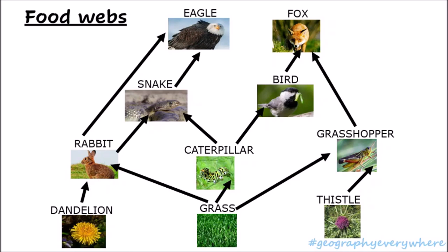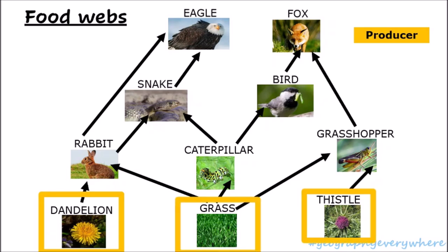This gives us a more clear idea of the feeding relationships within a habitat. Before we mentioned a few terms — the first one was a producer. In this food web, there are three producers: the dandelion, the grass, and the thistle. These are all organisms that make their own energy.